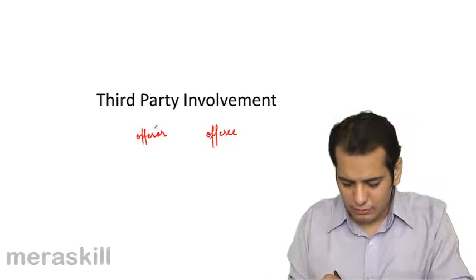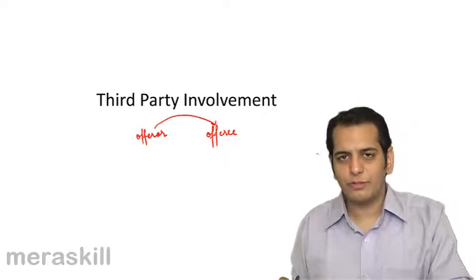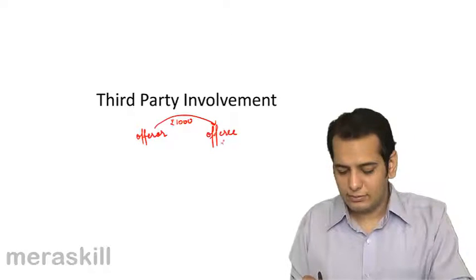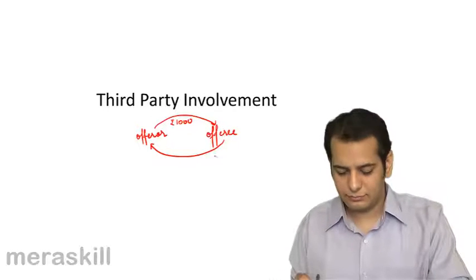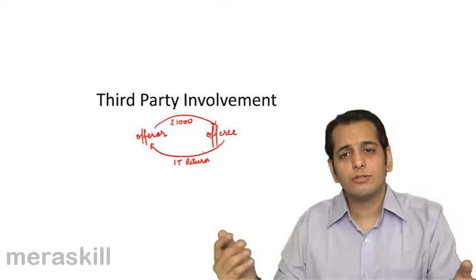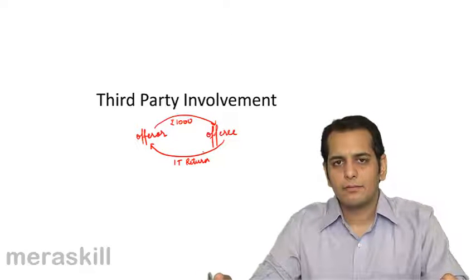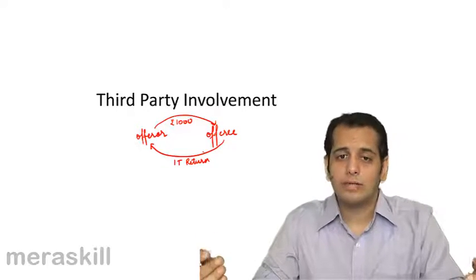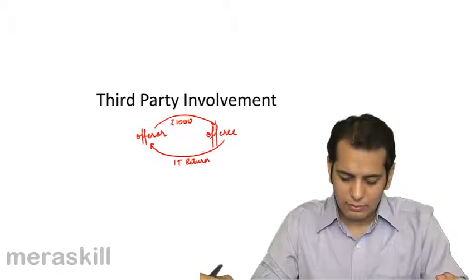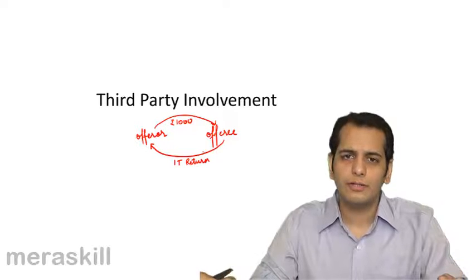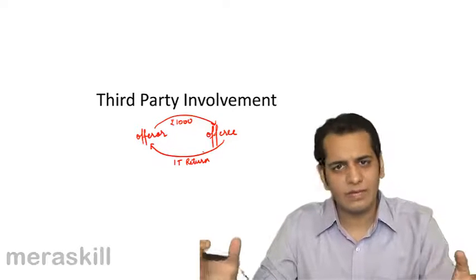Offerer gives an offer to the offeree saying he'll pay him rupees 1000 if he files his income tax return. This is a valid contract wherein the offerer wants to get his return filed and he is ready to pay 1000 for it. Offeree is also ready to file the return for Rs 1000. So we have a contract here.